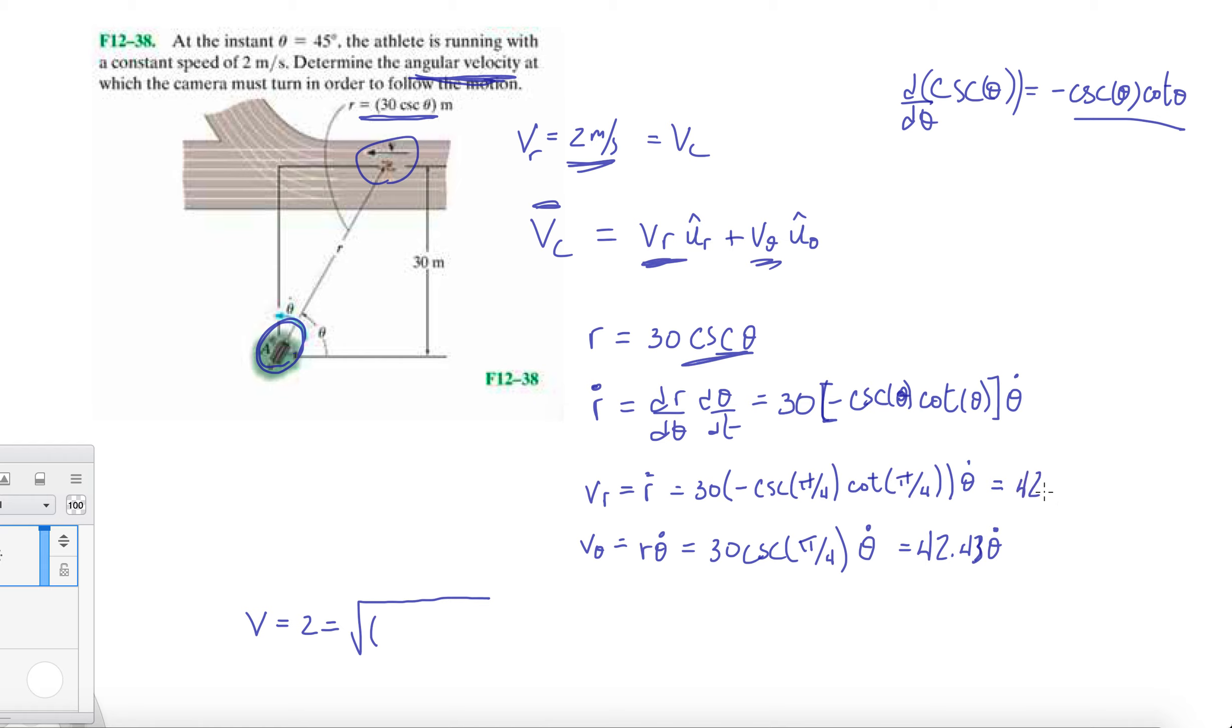This one is 42.43 theta dot if I haven't made any mistakes in my calculations, and then here we have 42.42 theta dot. So that's 42.42 theta dot squared plus 42.43 theta dot squared. When we factor out theta dot squared, we get 59.998 theta dot. Then theta dot equals 2 divided by 59.998, which gives us 0.033 radians per second.